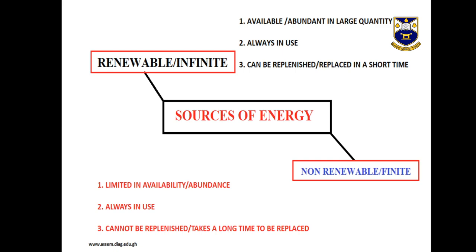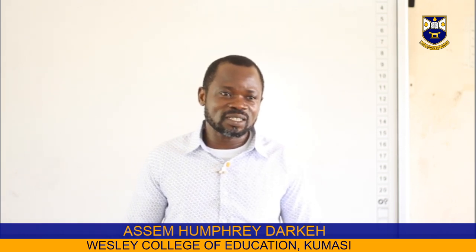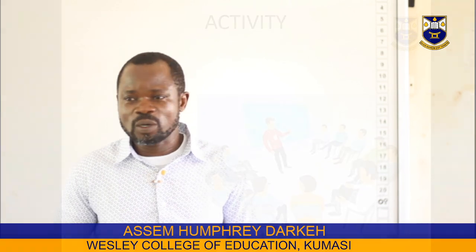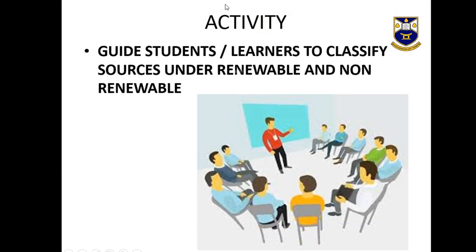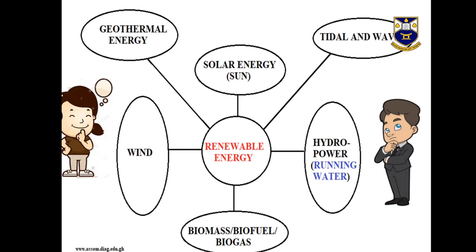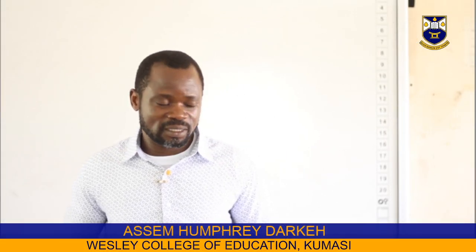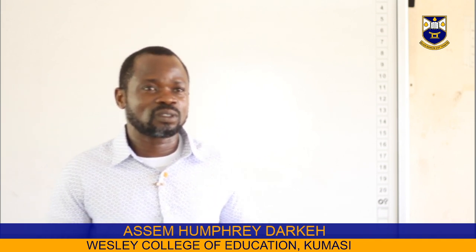Students should be able to look at the sources of energy and classify them into the two groups. You are supposed to get very interesting activities for students to do this, and the only way is for you to do advanced preparation. After students have gone through those activities, they should be able to tell you that the renewable energy sources are: wind, biomass, biofuels, biogas, hydropower, running water, tidal and waves, solar energy (the sun), geothermal energy, and gases.